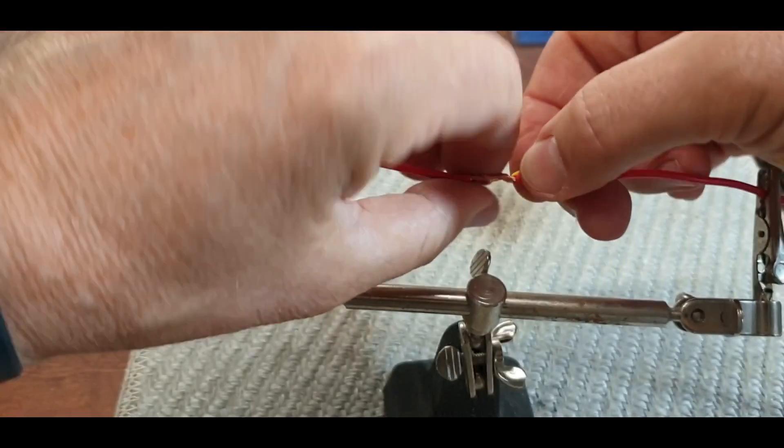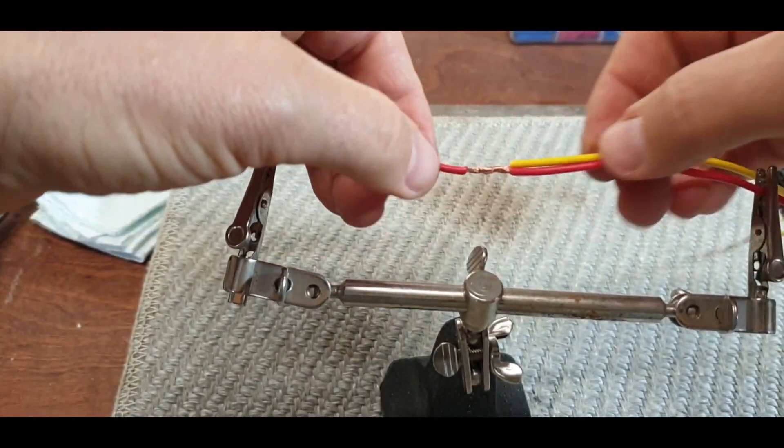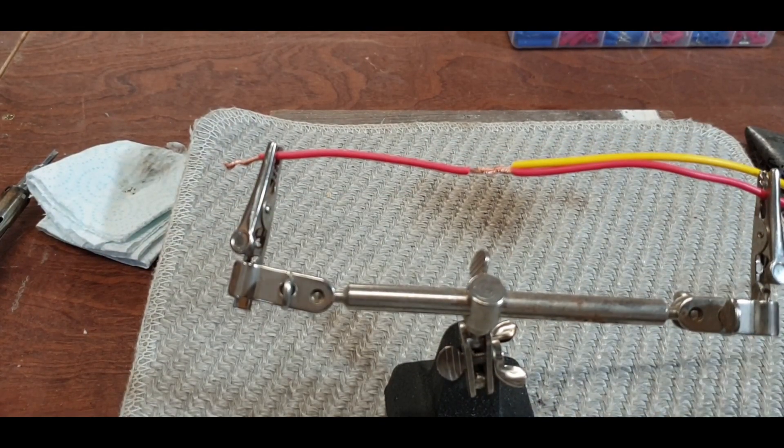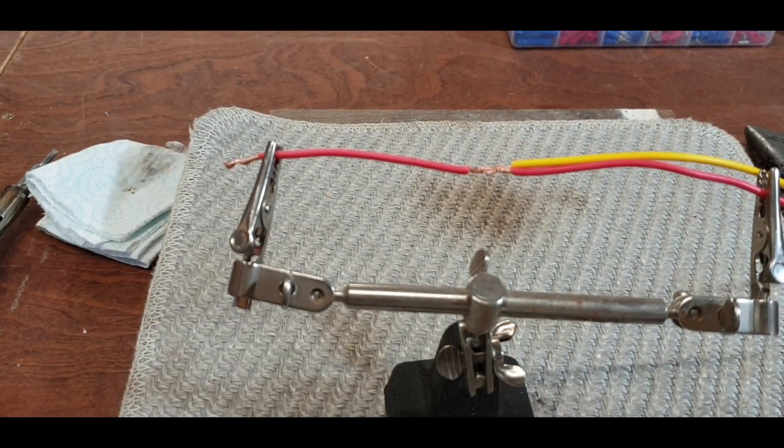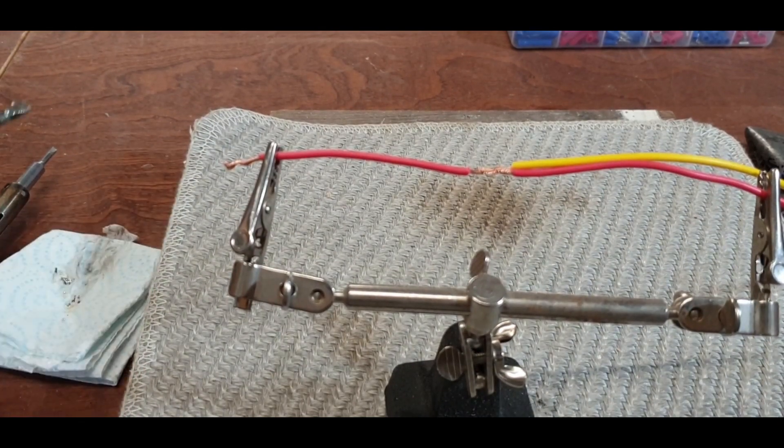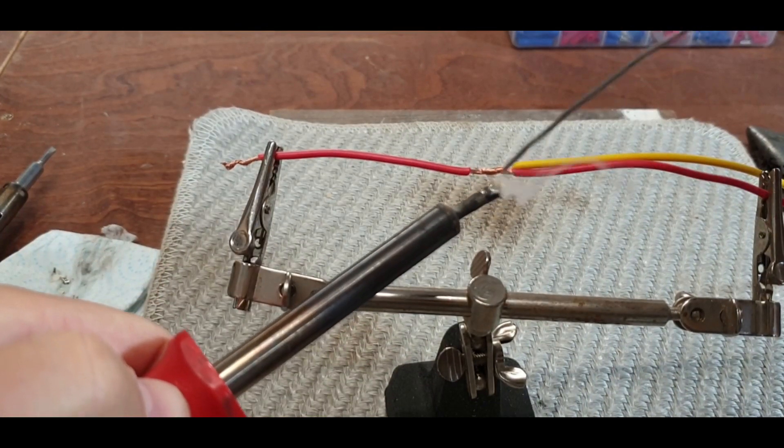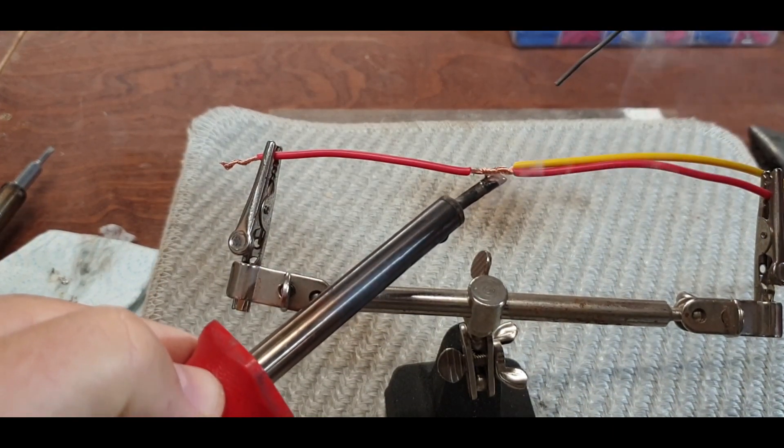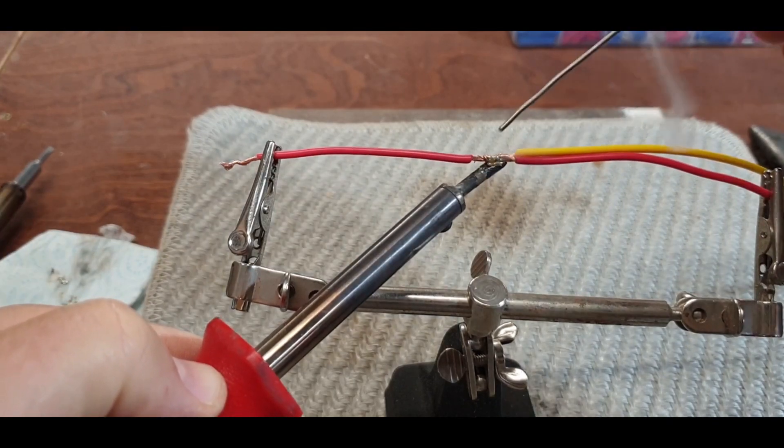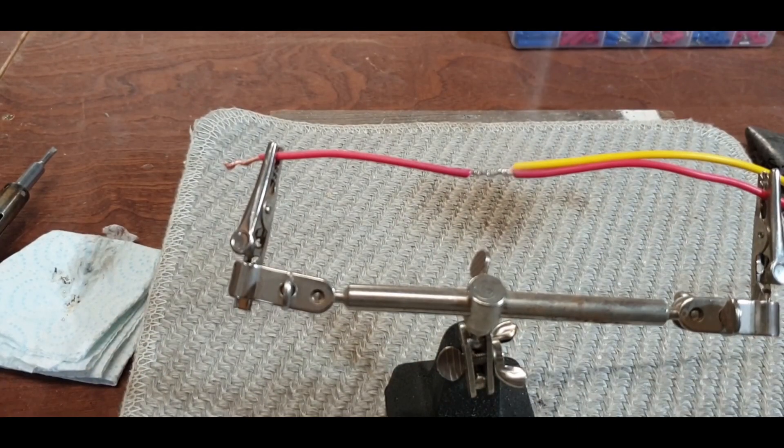So. Twist it round like this. If it's nice and tight. Like that. Then when we. Stick the solder on it. It's not going anywhere. Give that a clean. That's it. And again. Tinned the iron. Transfers the heat quicker. And you'll see it. There you go. It's gone. It's as quick. As that. Job done.